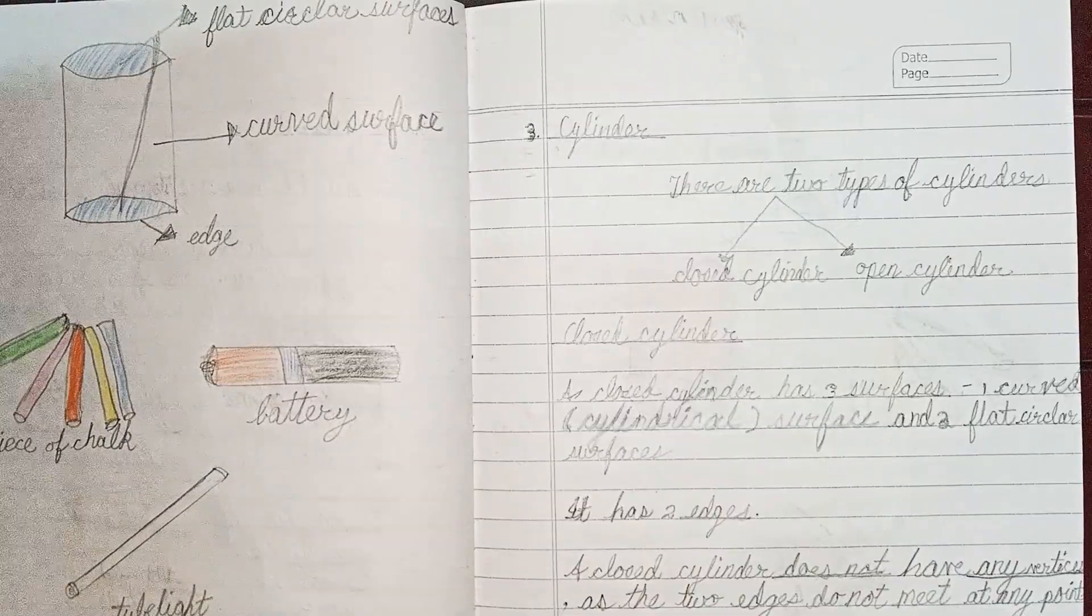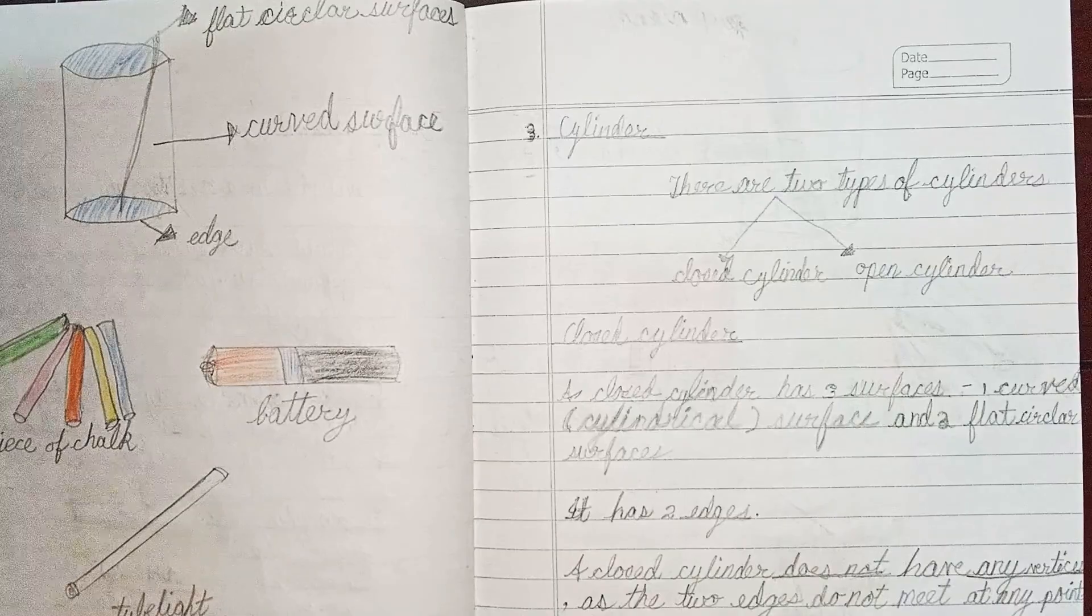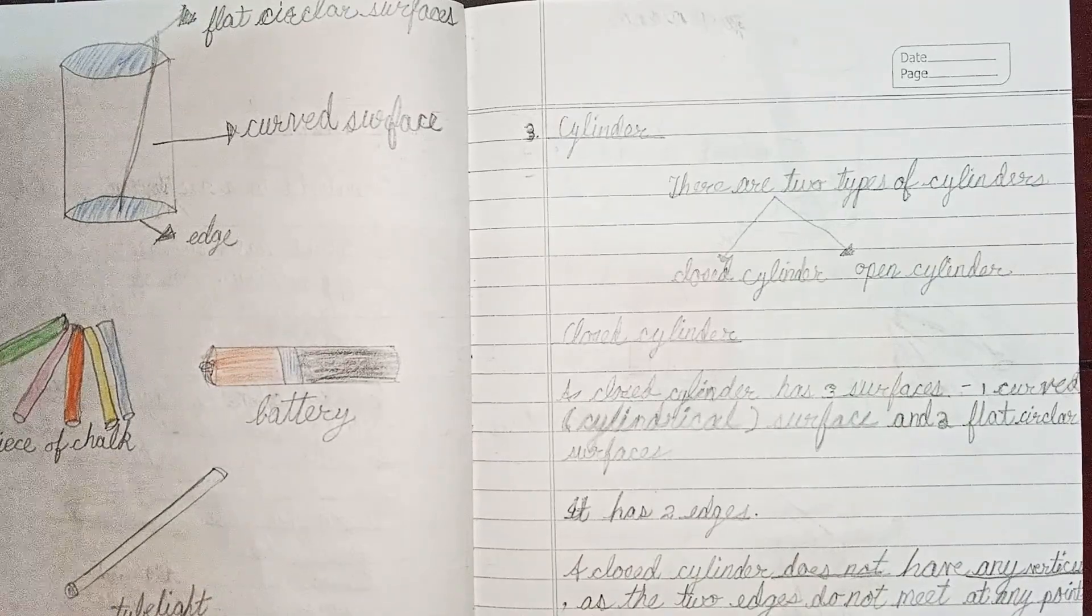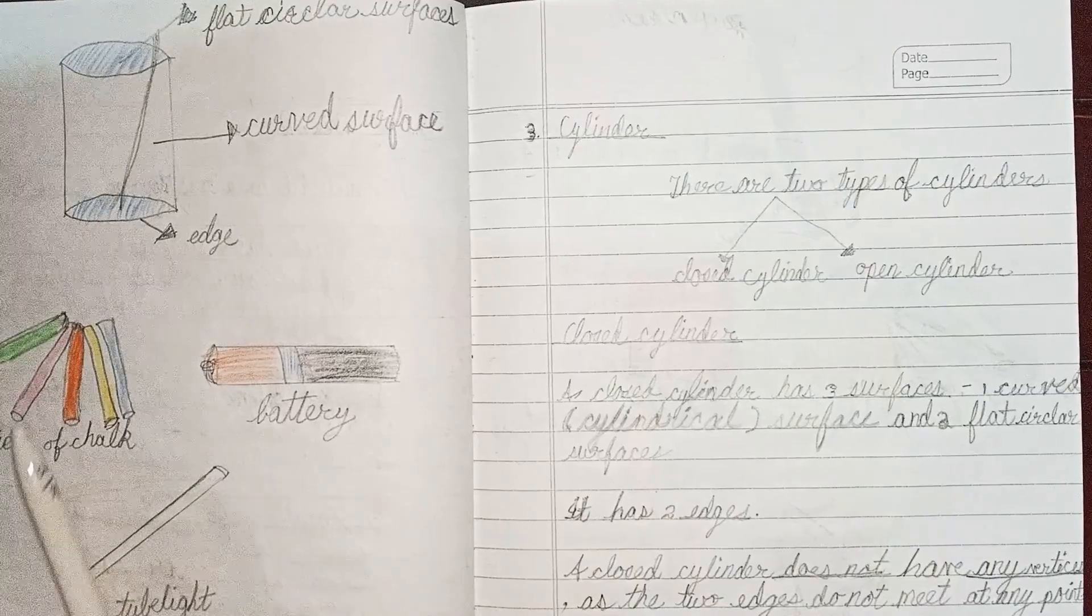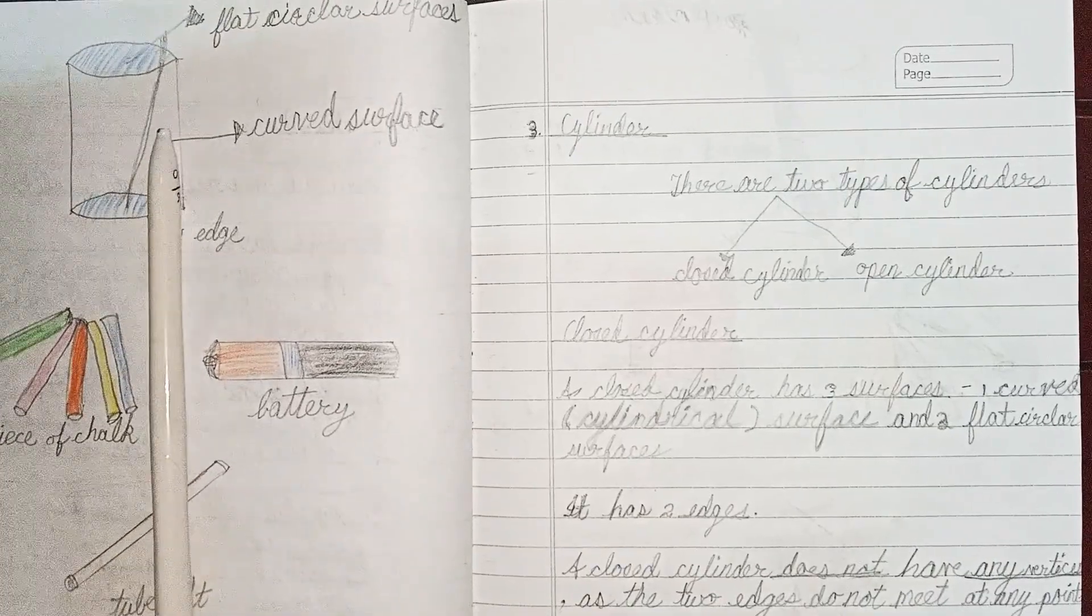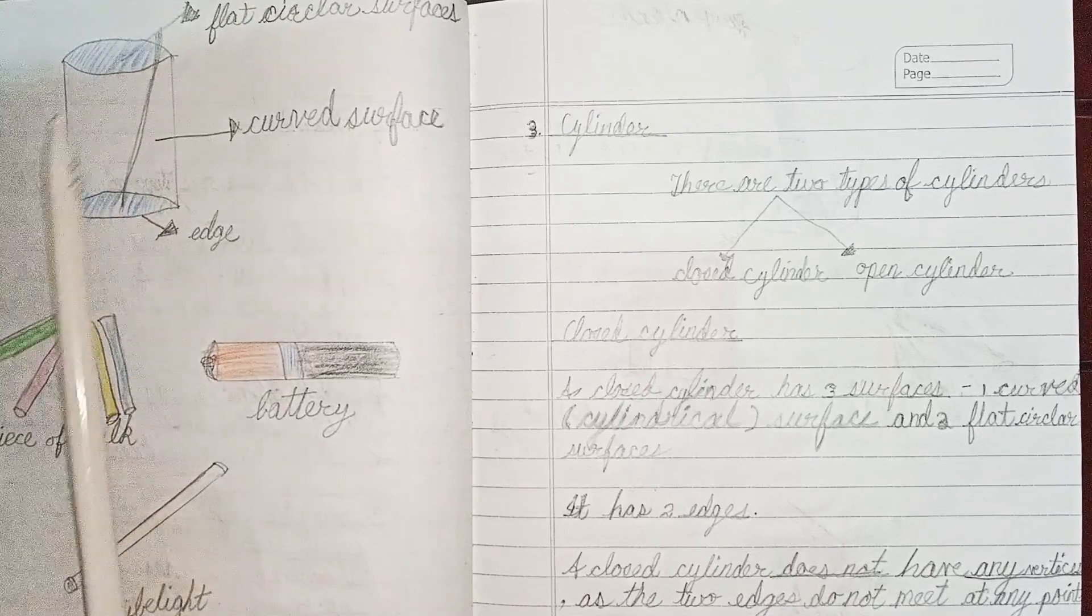Next solid figure is cylinder. There are two types of cylinders: closed cylinder and open cylinder. In closed cylinder, there are three surfaces - one curved surface and two flat surfaces.